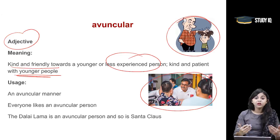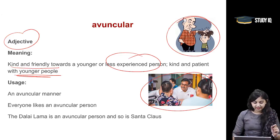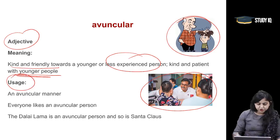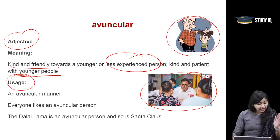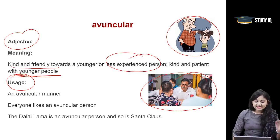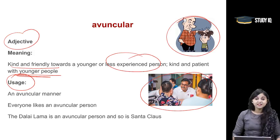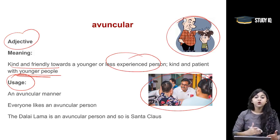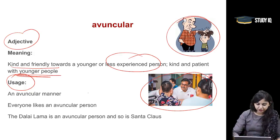We will use this adjective: Avuncular. Let's look at the usage. An avuncular manner. Everyone likes an avuncular person. The Dalai Lama is an avuncular person and so is Santa Claus. So, someone who is very kind and patient with someone who is inexperienced or younger — Avuncular.